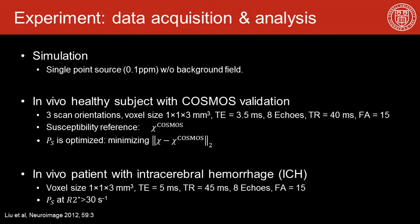For the experiment, we first designed a simulation where we put a single point source of 0.1 ppm in the ROI without simulating the background field, and applied each method to assess accuracy in estimating that source. For the in vivo experiment, we acquired data on healthy subjects with multiple scan orientations, and reconstructed the COSMOS map as the reference. The preconditioner weight is optimized by minimizing the error against the reference map, then applied to a patient database with intracerebral hemorrhage, where the hemorrhage region is segmented by thresholding R2*.